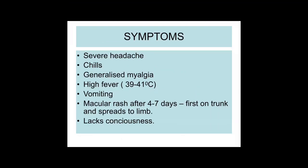The symptoms of epidemic typhus are severe headache, chills, generalized myalgia, high fever in the range of 39 to 41 degrees Celsius, vomiting, and a maculopapular rash that occurs after 4 to 5 days, beginning first on the trunk and spreading to the limbs.